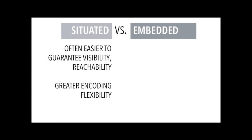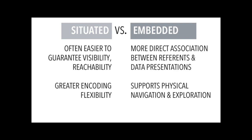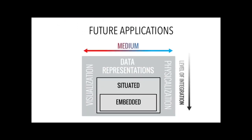Similarly, if we compare situated to embedded views, situated views are often going to be much easier to construct — it's much easier to guarantee the visibility of individual points or the reachability, and you have a lot more encoding flexibility because the spatiality of these visualizations isn't necessarily determined. On the other hand, if we build more embedded visualizations and physicalizations, we can create much more direct associations between reference and physical presentations, and support things like physical navigation and exploration that might be really valuable. I really want to encourage anyone interested in this to consider the generative potential of this framework, particularly the lower right-hand corner here, which I think we as a field have only really begun to explore.